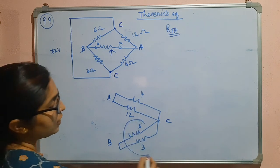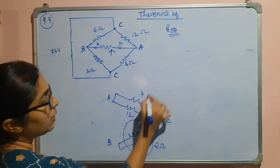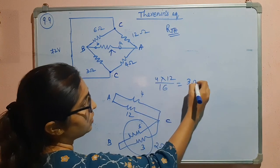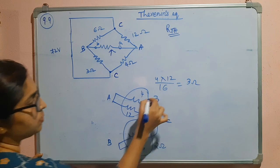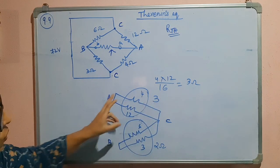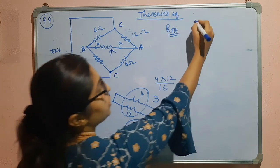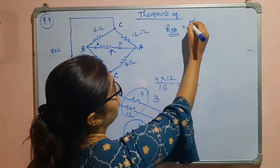So the resultant of this will be 2 ohms. This one is 4 into 12 divided by 16, so this is 3 ohms. In between these two we can see these are in series. So 3 plus 2 is 5 ohms. RTH will be equal to 5 ohms.